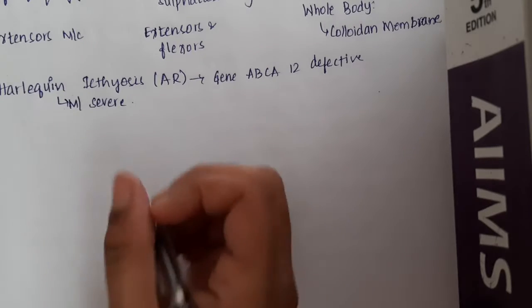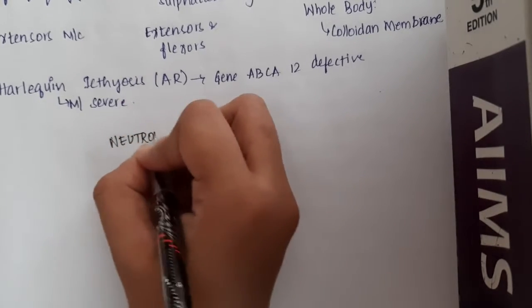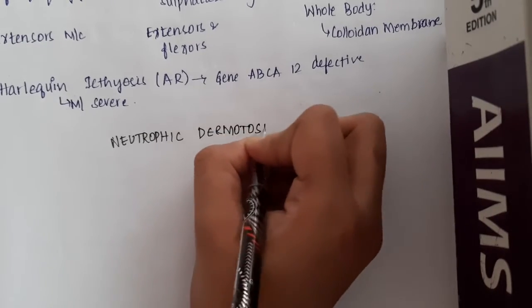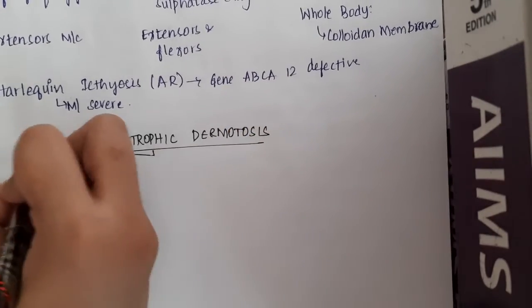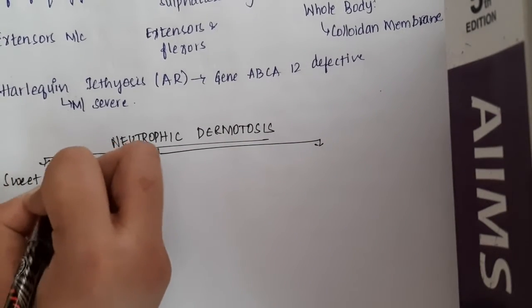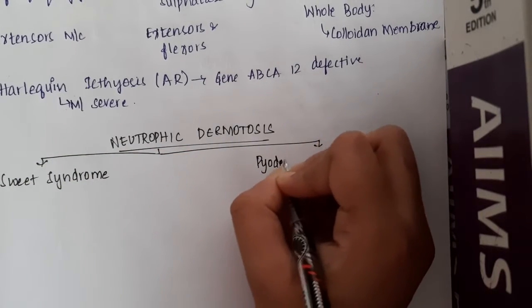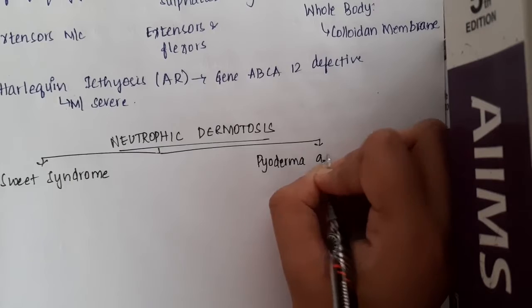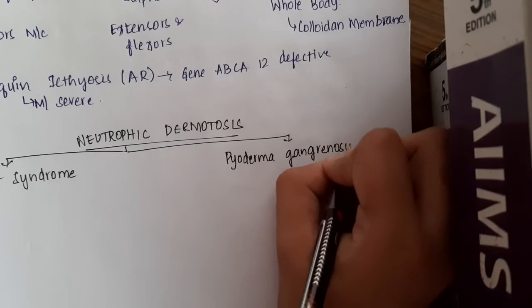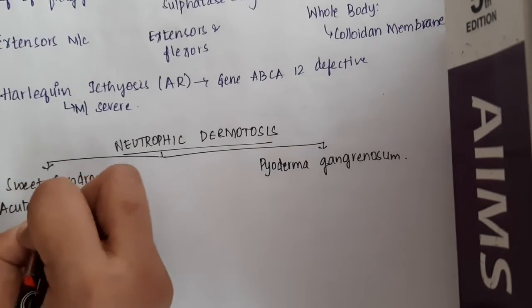We have something called neutrophilic dermatosis. This neutrophilic dermatosis has two types: the first is Sweet syndrome, and the second type is pyoderma gangrenosum. Sweet syndrome can also be called acute febrile neutrophilic dermatosis.